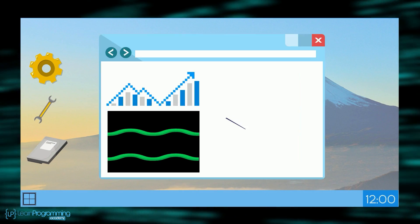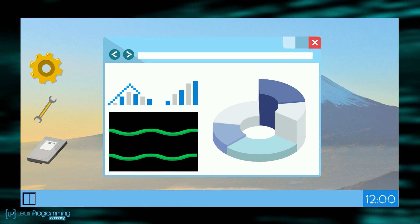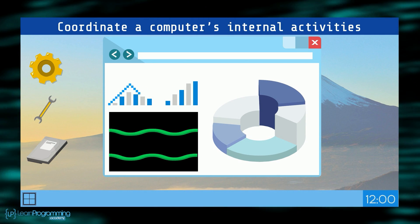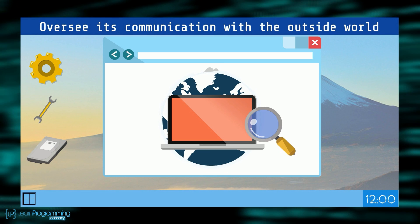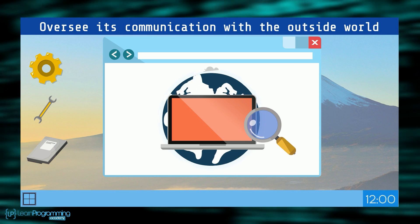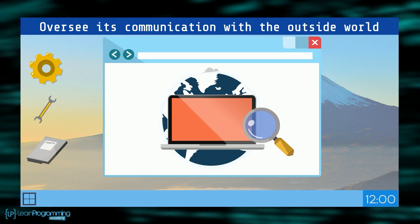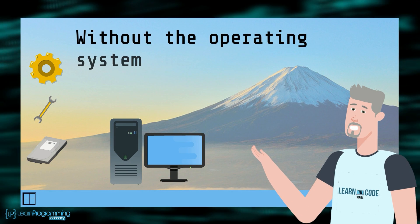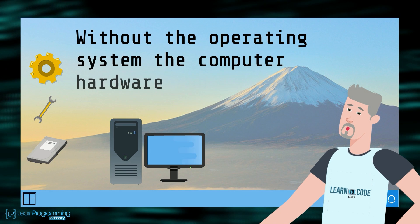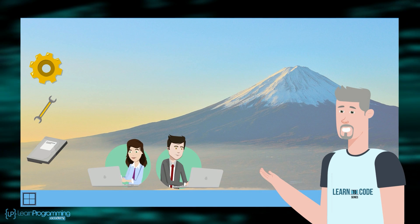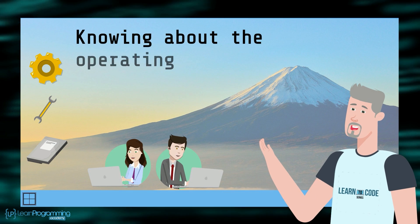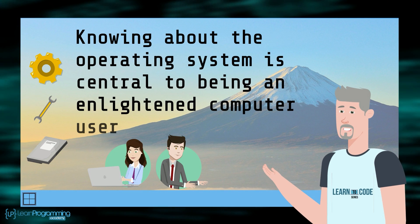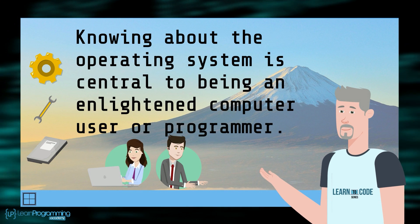The role of an operating system in any computing device is to coordinate a computer's internal activities as well as oversee its communication with the outside world. Without the operating system, the computer hardware can do nothing. Knowing about the operating system is central to being an enlightened computer user or programmer.